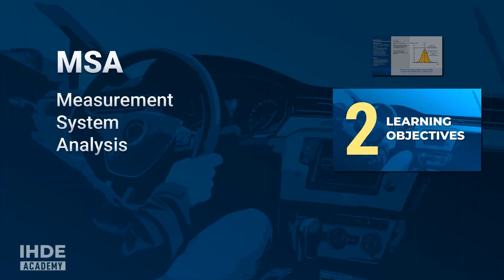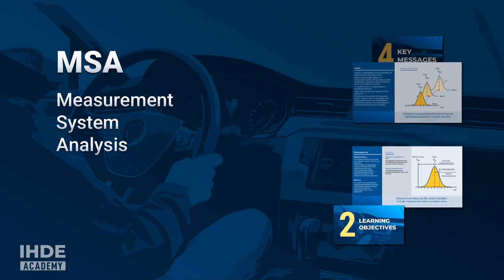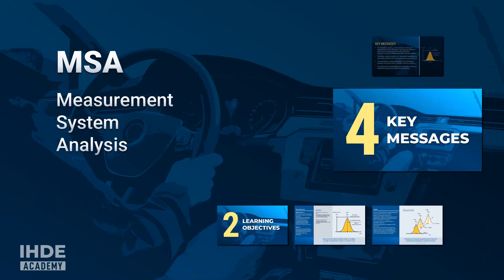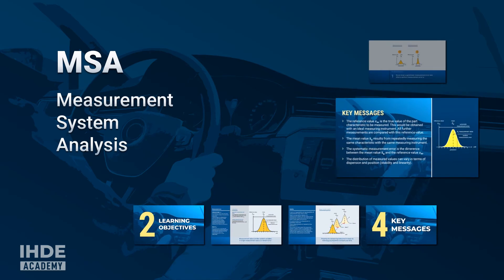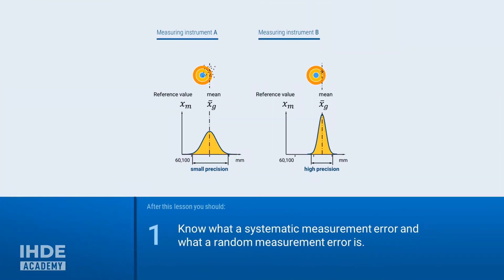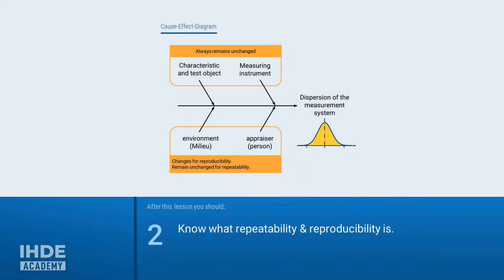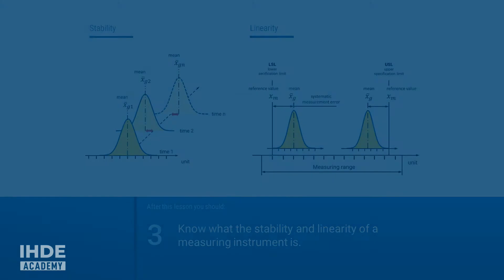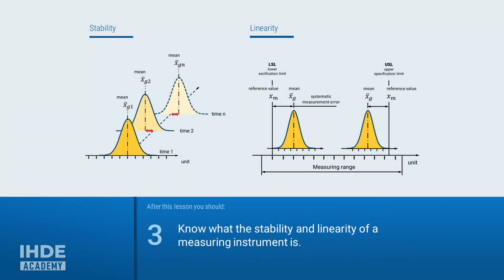In this lesson we will look at the different types of measurement errors, and it is explained what repeatability and reproducibility have to do with the variability of measured values. This lesson has three learning objectives. At the end you should know what a systematic error and what a random error is. You should further understand what repeatability and reproducibility (R&R) is. And finally, you should know what is meant by stability and linearity.